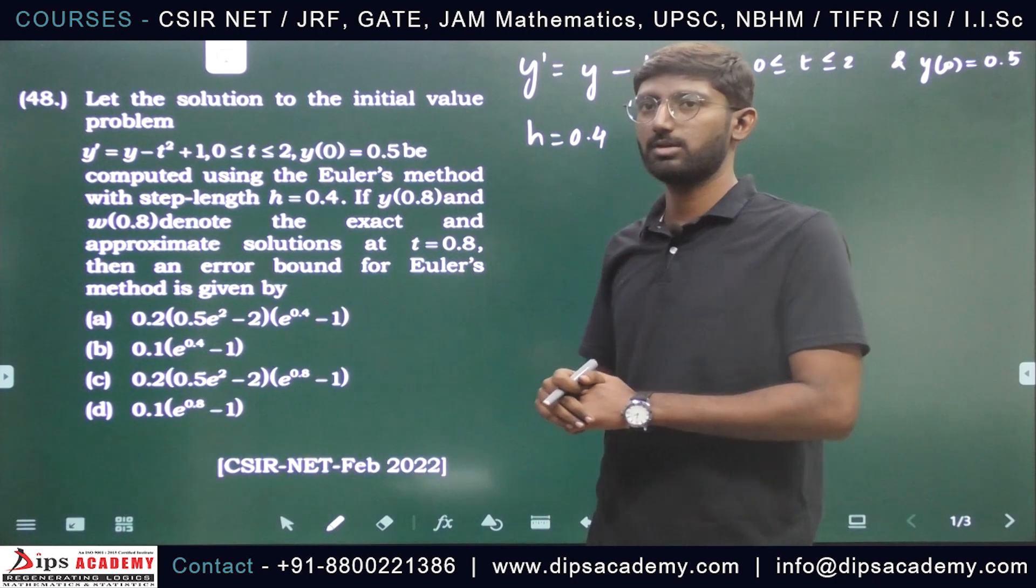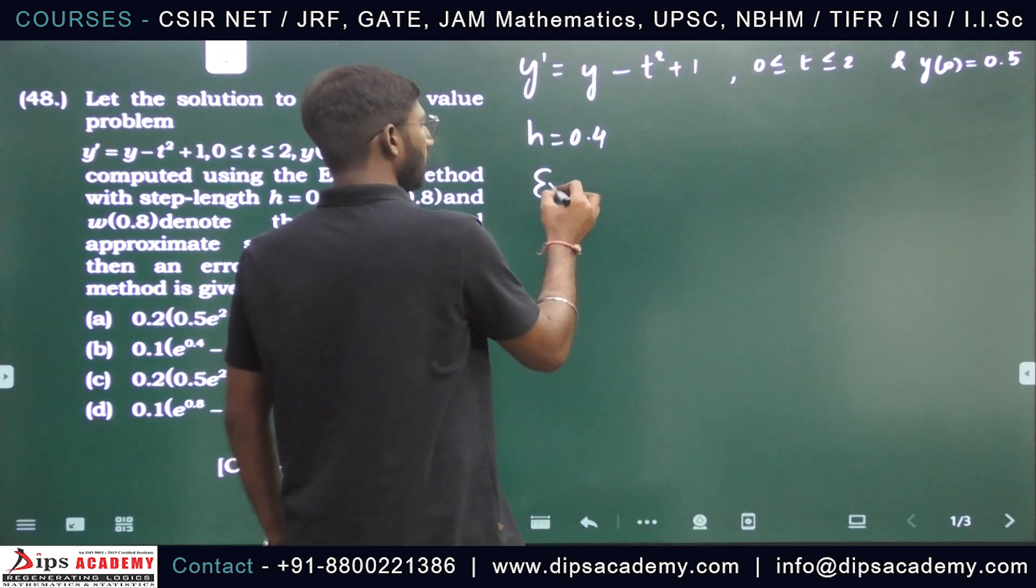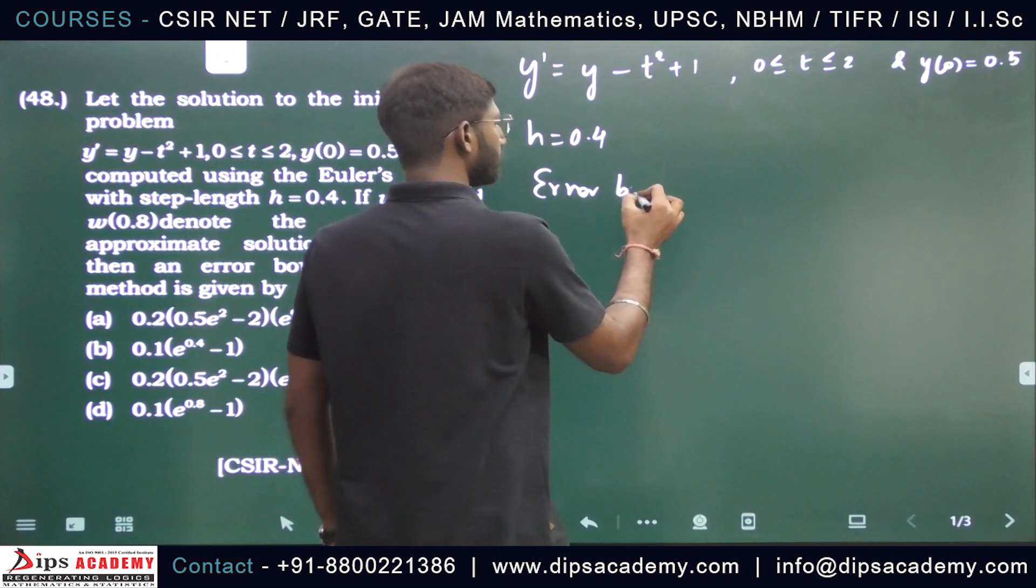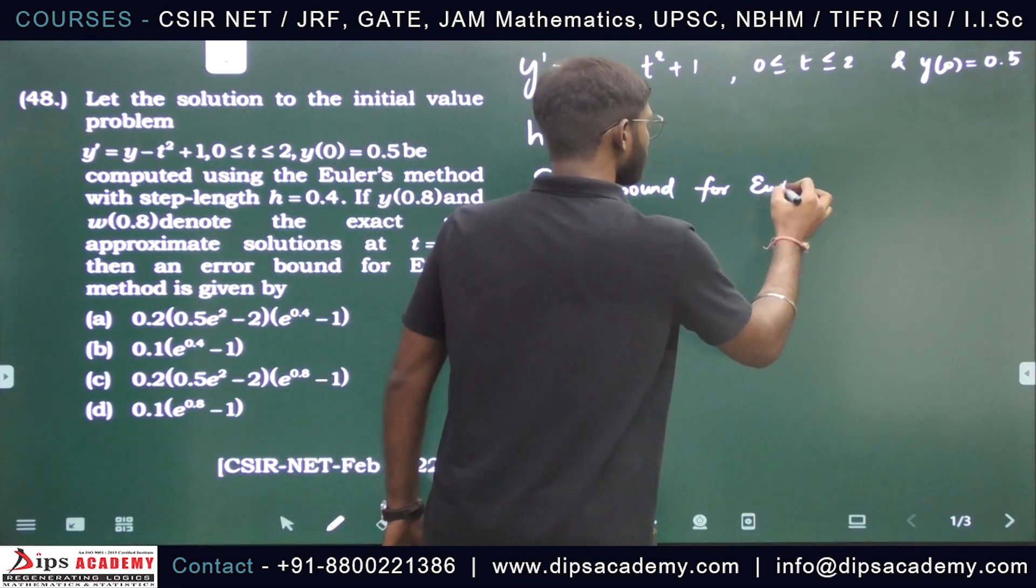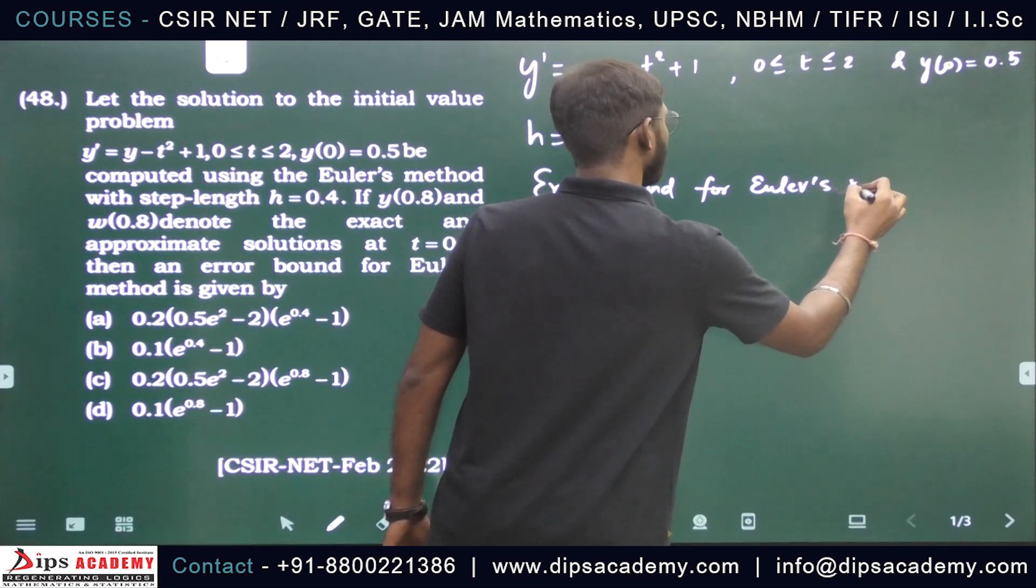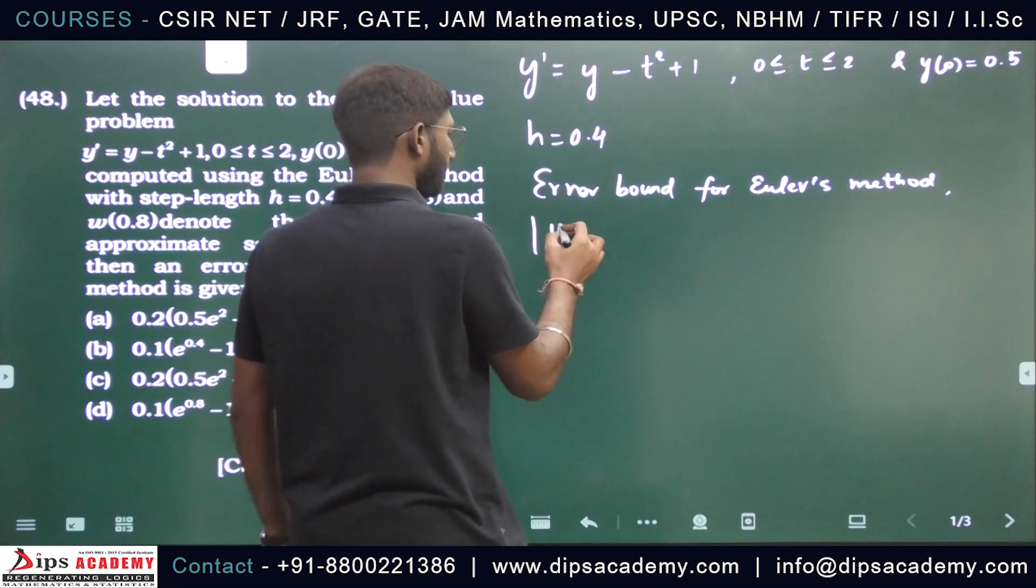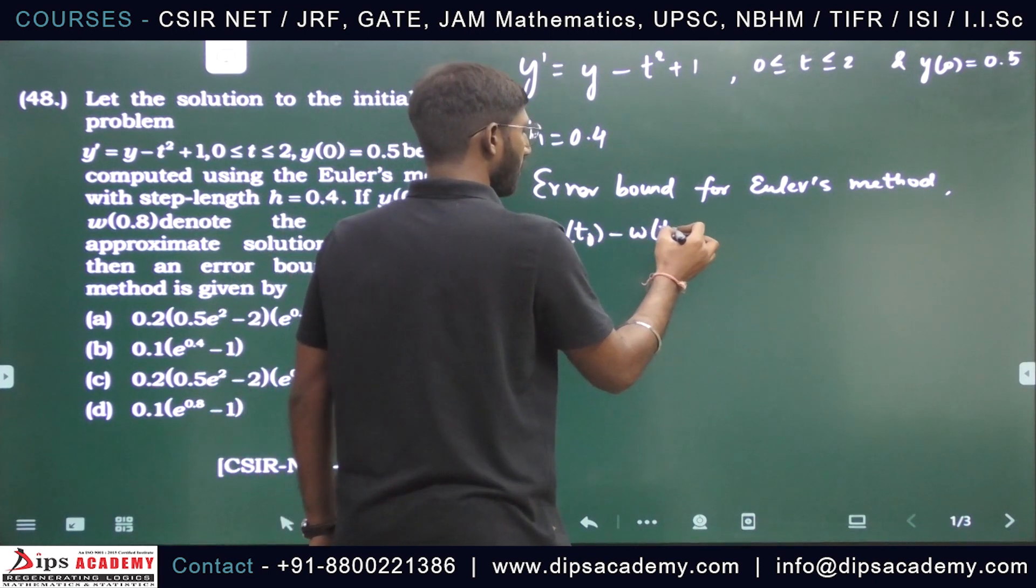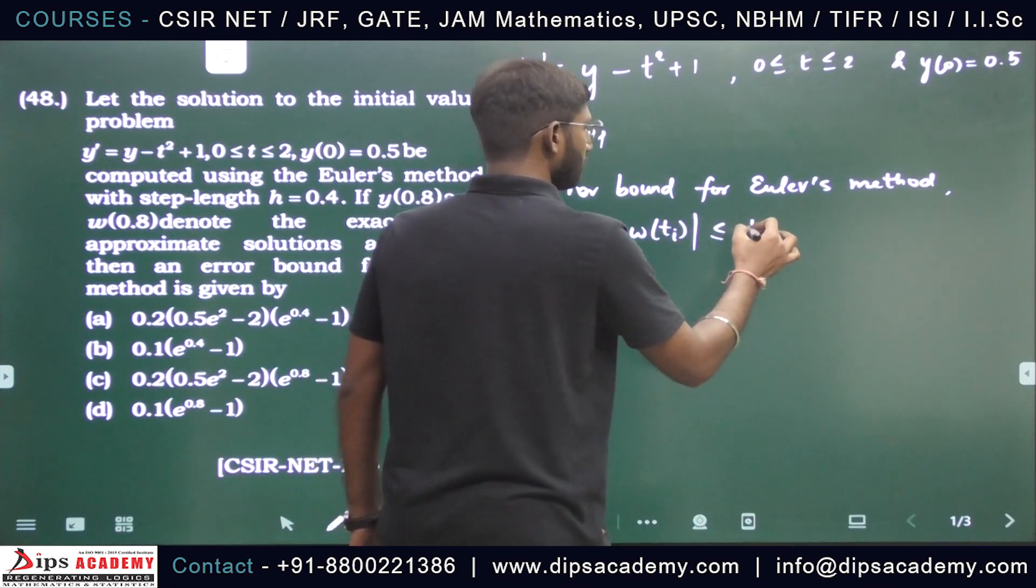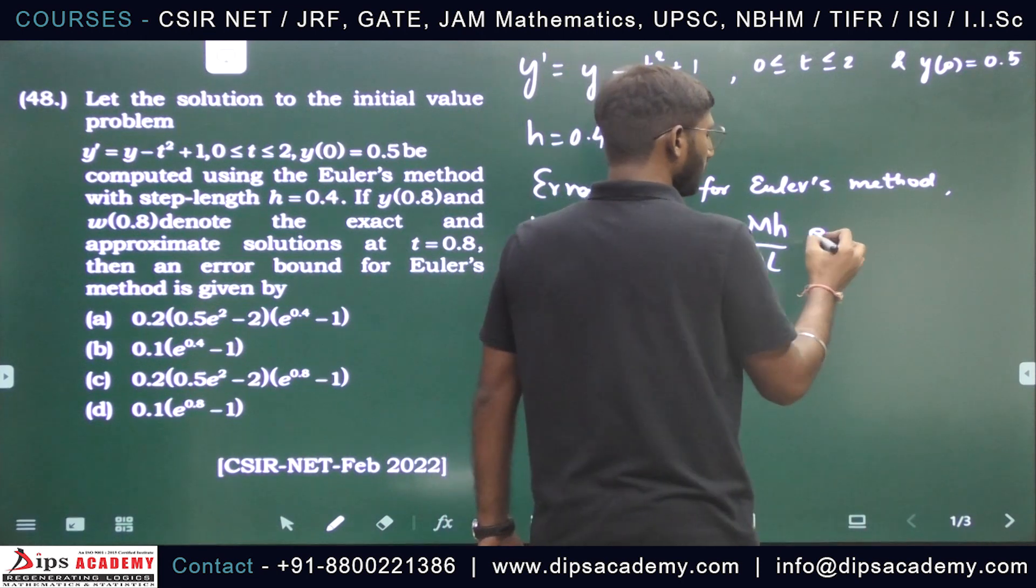Then an error bound for the Euler method at any point, let's write: |y(ti) - w(ti)| is less than or equal to (m*h)/(2*L) * e^(L*(ti-a)) - 1.